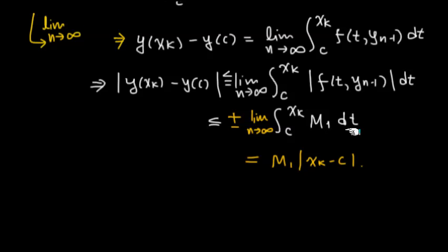Now this part you can calculate. M_1 is just a constant, so if you calculate this integral, it's an absolute value of x_k minus c. Now then you can lose the plus-minus in there.